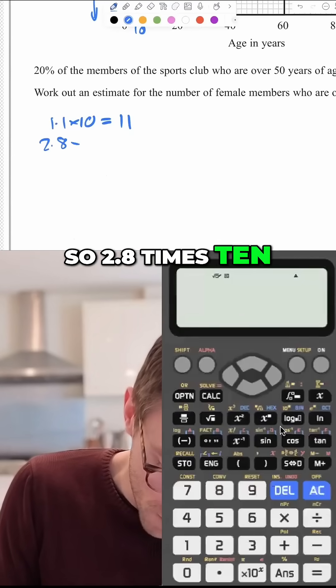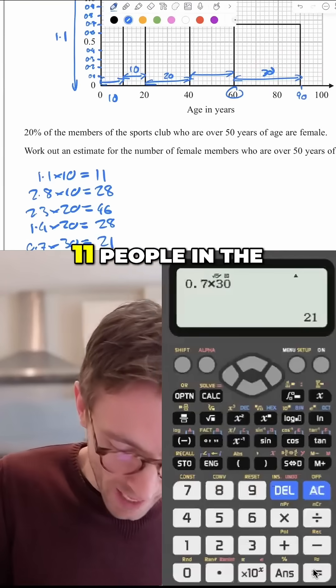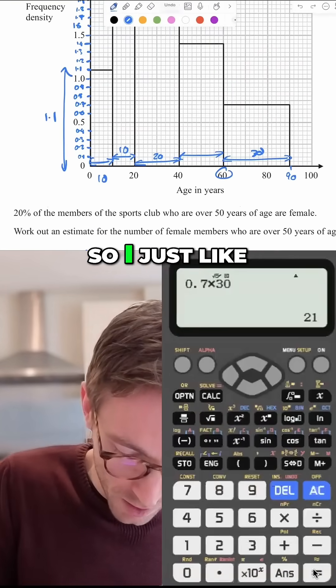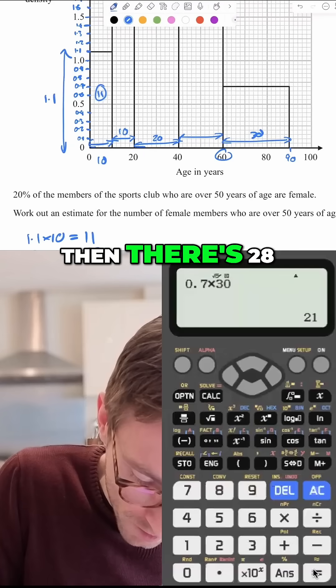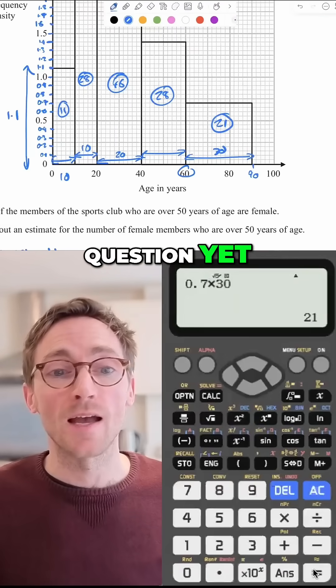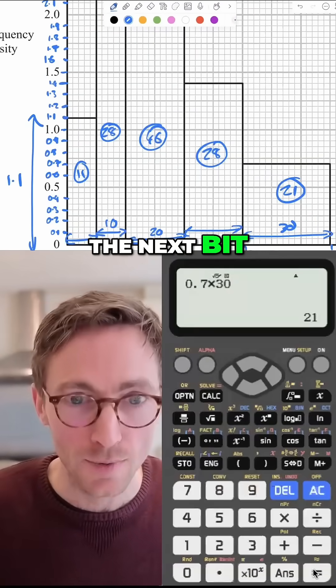So, 2.8 times 10 equals 28. Use your calculator. You literally keep going. So this means there's 11 people in the first box. I just like to write the number and put a circle around it. Then there's 28. OK, I haven't read the question yet, but I've got loads of marks. And I just know from experience that so many people actually then know how to do the next bit.